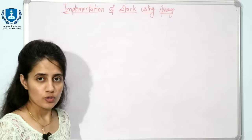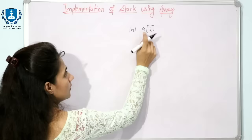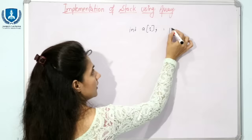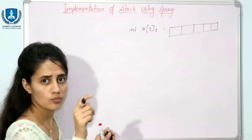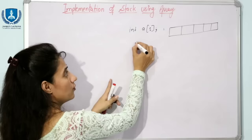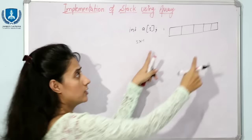Everybody knows how to declare an array: data type, name of the array, and size of the array. When you declare this array it means in memory five blocks have been allocated. With integers, each block is 4 bytes, so 5 into 4 means 20 bytes would be allocated.